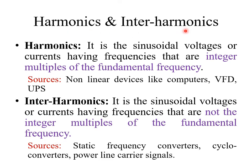Harmonics are defined as voltages or currents whose frequencies are integral multiples of the fundamental frequency. For example, if the fundamental frequency is 50 Hz, the harmonics are 100 Hz, 150 Hz, 200 Hz, and so on. Sources of harmonics include non-linear devices like computers, variable frequency drives, and UPS systems that use power electronic components such as SCR, IGBT, and MOSFET.